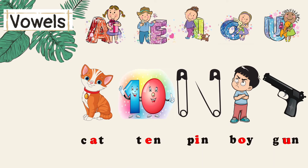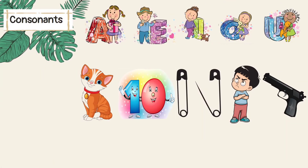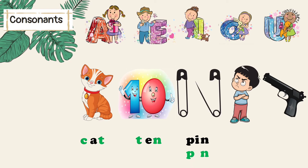In C-A-T, cat — C and T are consonants. In T-E-N, ten — T and N are consonants. In P-I-N, pin — P and N are consonants. In B-O-Y, boy — B and Y are consonants.